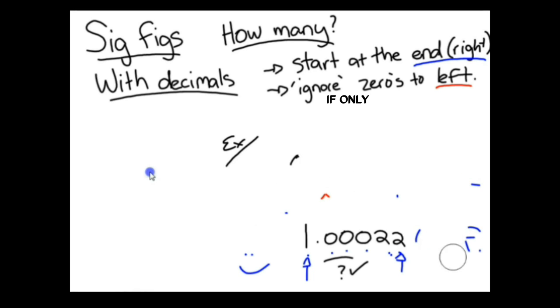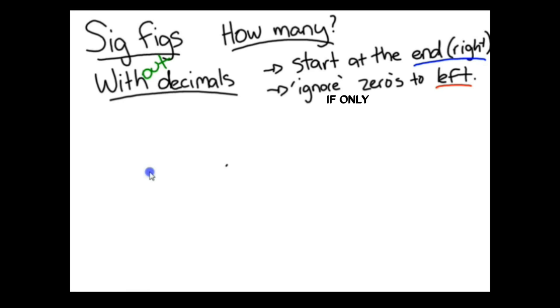Now, moving on to numbers without decimal places. So, standard numbers like 127 or 208. Here, we need to switch up our rules a little bit. In this case, you do the opposite. You start at the left, and if the ending or the right of the number is only zeros, you ignore it.